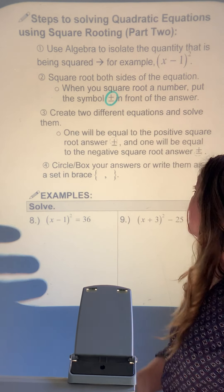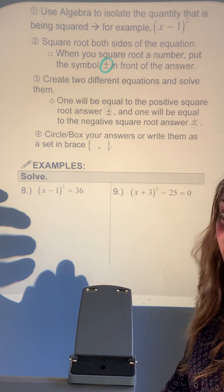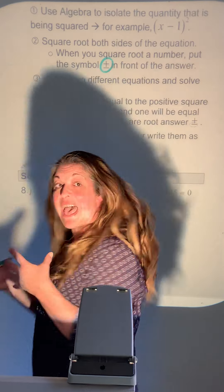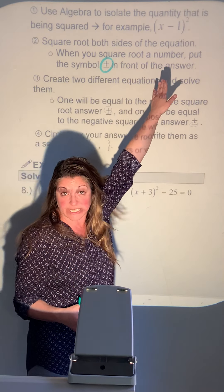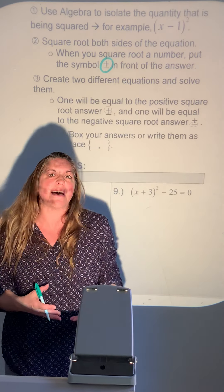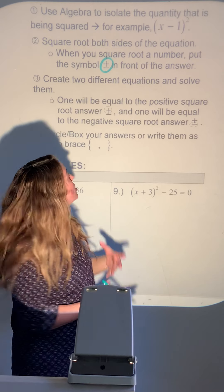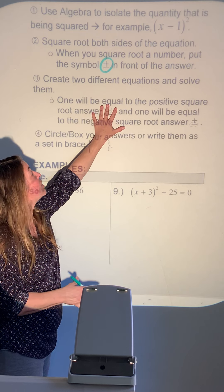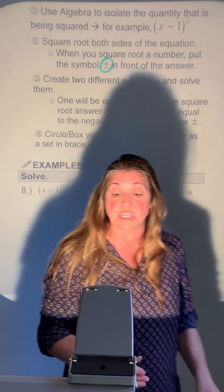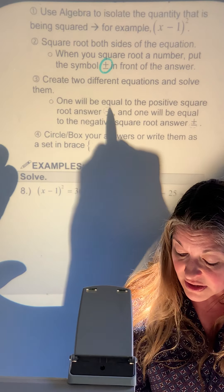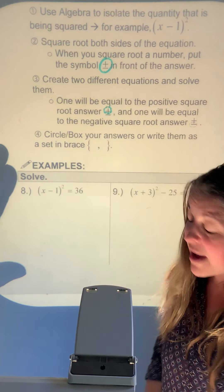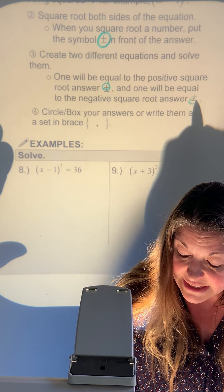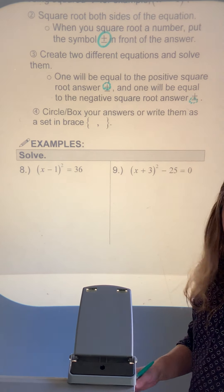The difference here is that we're not done yet after square rooting, because we still have extra terms — like the minus 1 — with x. So from there we split and create two different equations: one set equal to the positive value, and one set equal to the negative value. Then solve both to get two answers.